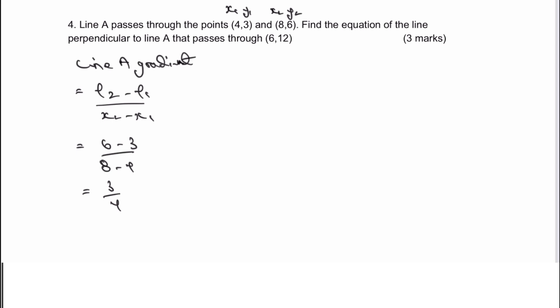And that's going to give me a gradient for line A of 3 quarters. Then it says find the equation of the line perpendicular to line A that passes through the point 6, 12. Well the perpendicular line is going to be the negative reciprocal of the gradient.